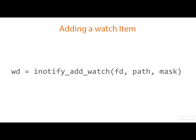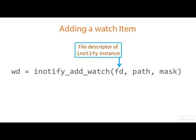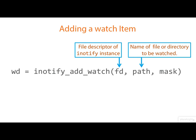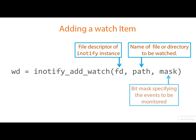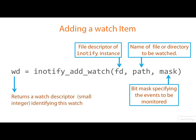Once we've got the instance, we can add watches to it with iNotifyAddWatch. The first argument is the file descriptor of the iNotify instance. The second is the path name — this could be relative or absolute — of the file or the directory that you want to watch. And the third argument is a bit mask specifying which events you want to monitor. You get back a thing called a watch descriptor. These are just small integers, allocated one, two, three, and so on, that identifies this particular watch.